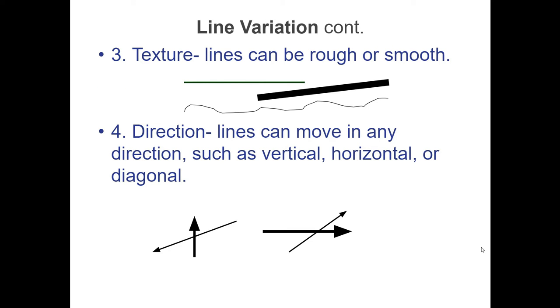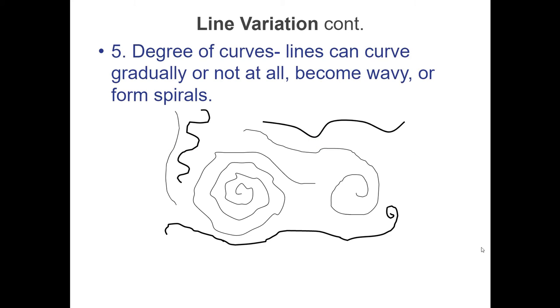Texture—they can be rough or smooth. Are we using a gliding ink pen on paper, or chalk that would create a rougher line? Four, the direction of lines. They can move in any direction—vertical, horizontal, or diagonal.